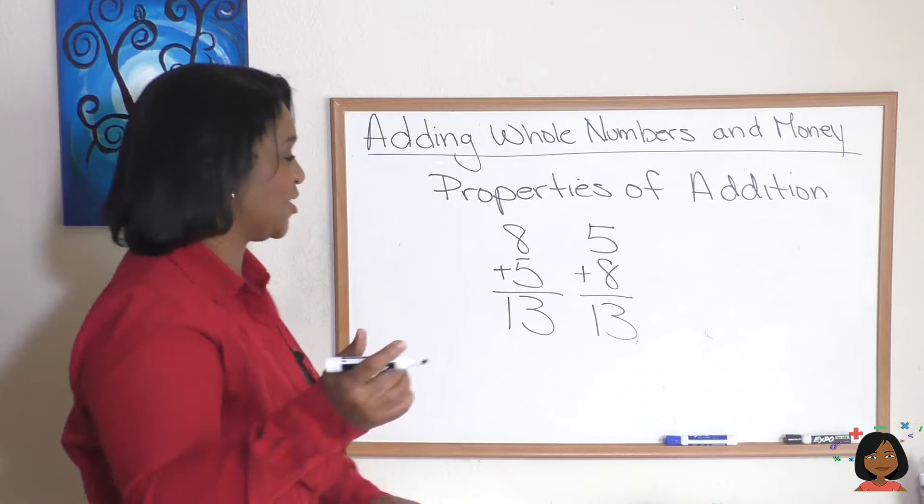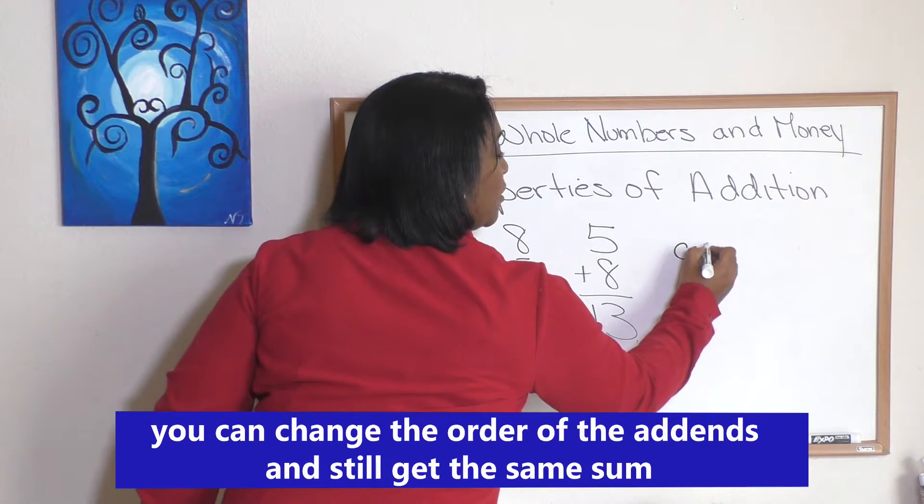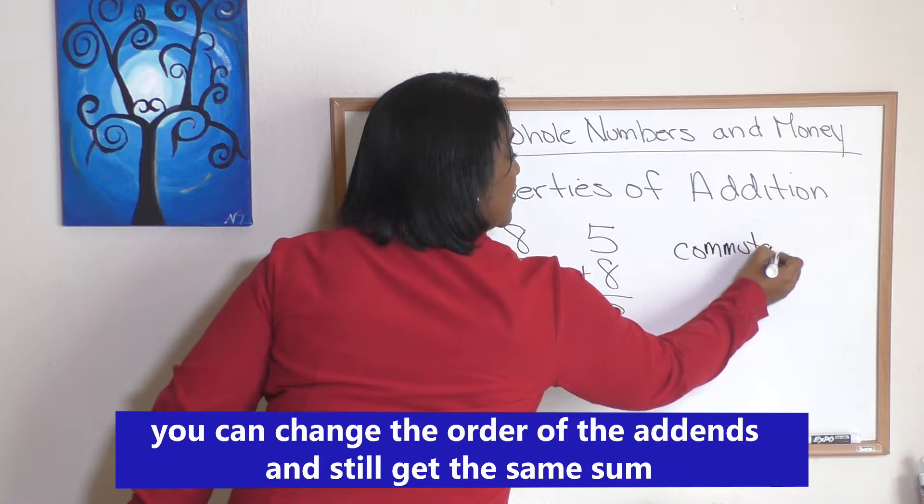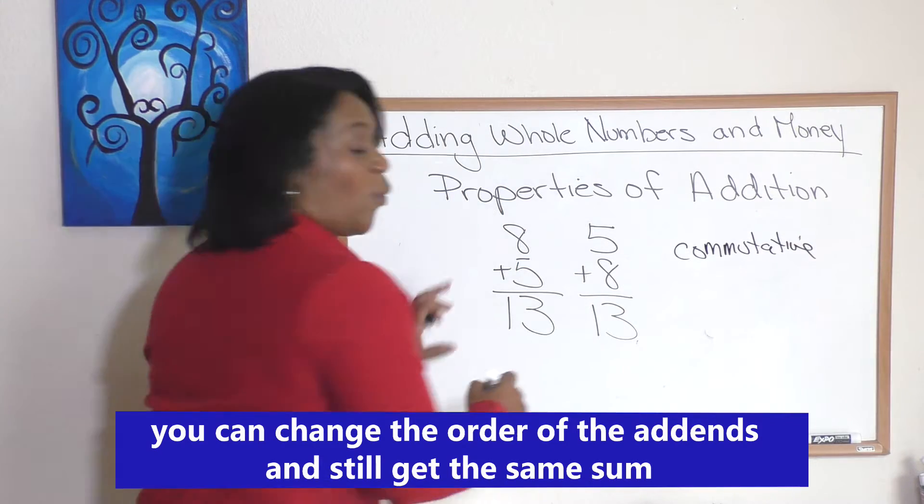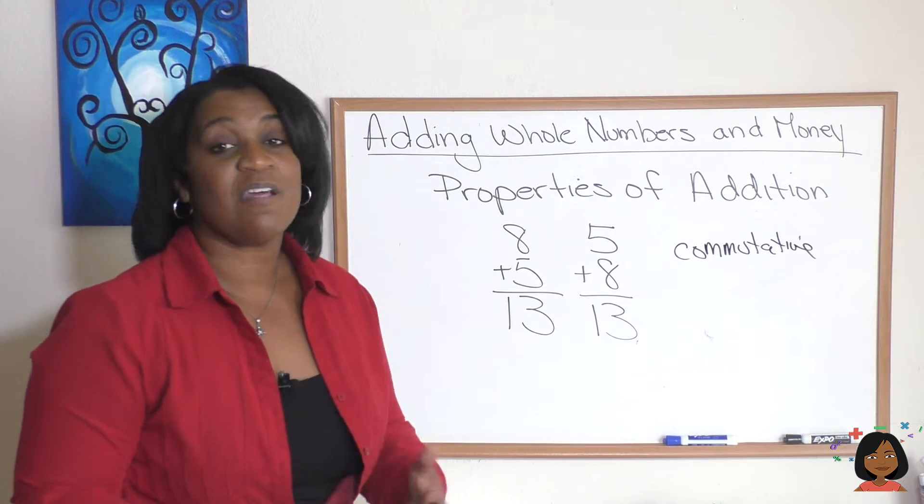Commutative means it doesn't matter the order that we add the addends; the sum is still going to be the same.